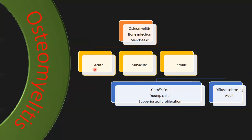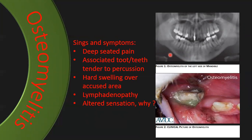Chronic osteomyelitis is divided into Gary's osteomyelitis and diffuse sclerosing osteomyelitis. In acute and subacute stages, the patient will have clinical signs: deep-seated pain, the associated tooth is tender to percussion, hard swelling over the affected area with lymphadenopathy and altered sensation. The two most important diagnostic features are deep-seated pain and altered sensation.